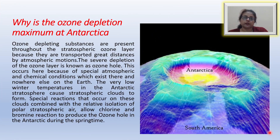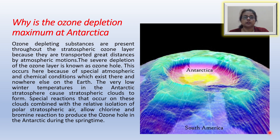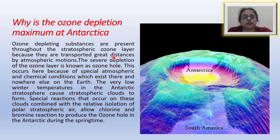A very important question is: why is the ozone depletion maximum at the Antarctic? We do not find ozone depletion everywhere — it is only concentrated above the Antarctic. Ozone depleting substances are found throughout the stratosphere because they are transported great distances by atmospheric motions.